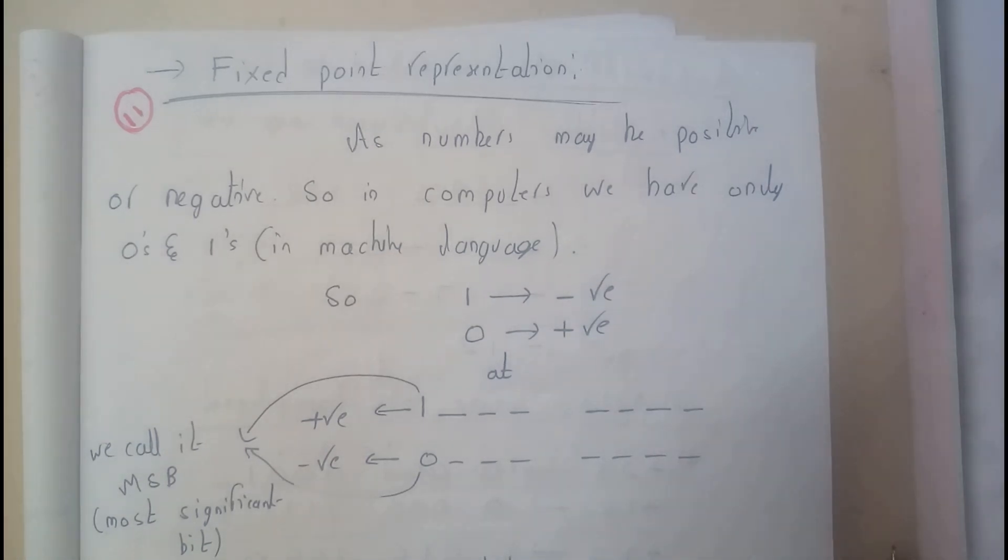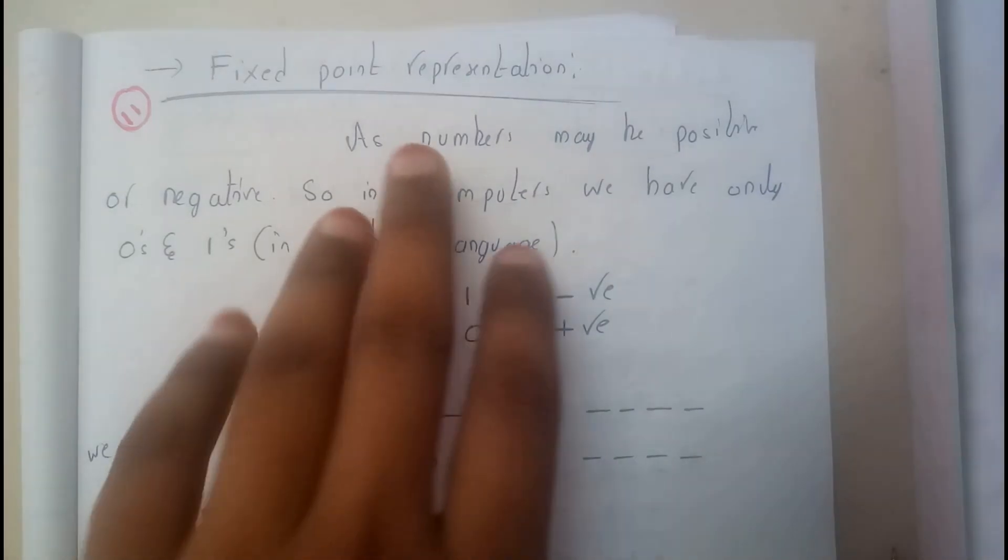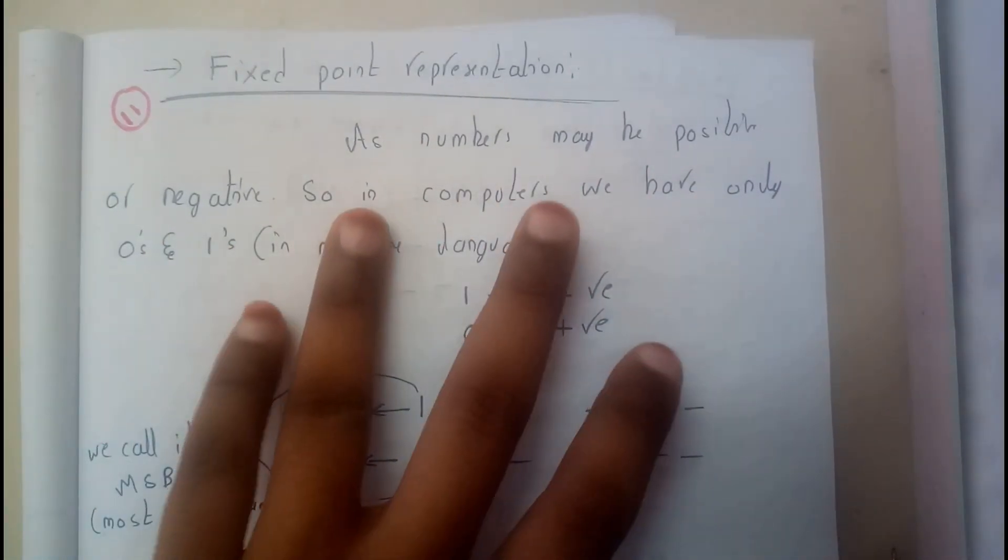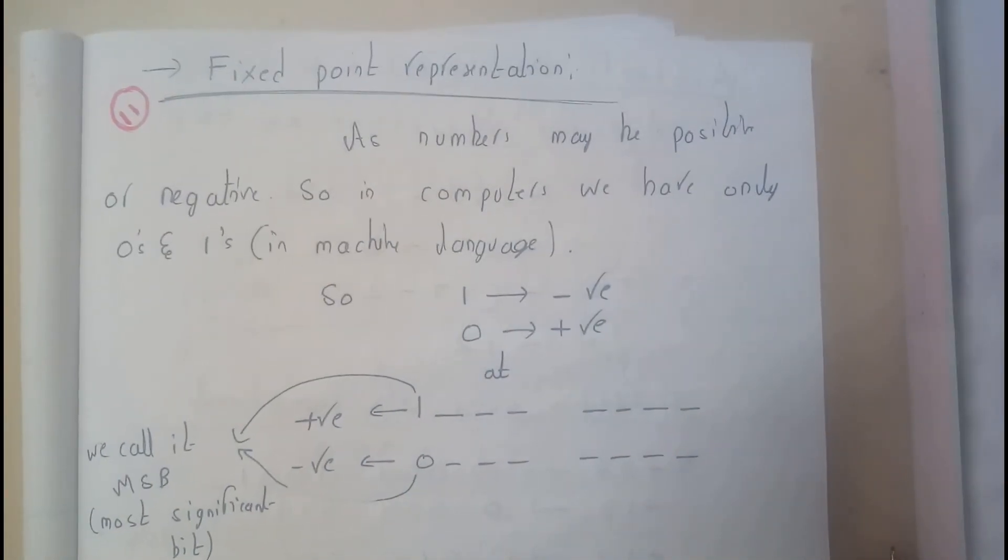Hello guys, we are back with our next tutorial. In this tutorial, let us see the fixed point representation. It is nothing but whether the integer or the value is positive or negative. So we need to find that. As numbers may be positive or negative, so in computers we have only zeros and ones.